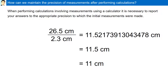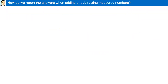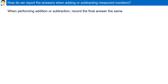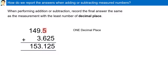How can we maintain the precision of measurements after performing calculations? When performing calculations involving measurements using a calculator, it is necessary to report your answers to the appropriate precision to which the initial measurements were made. When performing addition or subtraction, record the final answer the same as the measurement with the least number of decimal places. Here we have 149.5 (1 decimal place) and 3.625 (3 decimal places). Our final answer should be reported to 1 decimal place: 153.1.